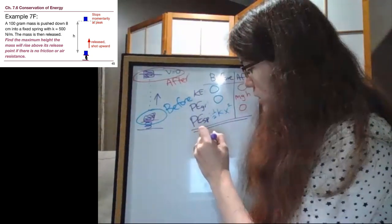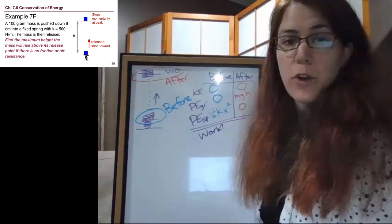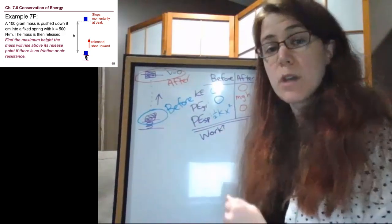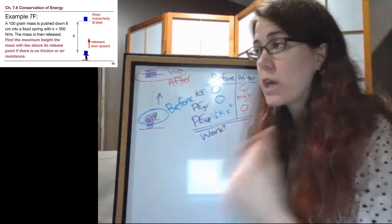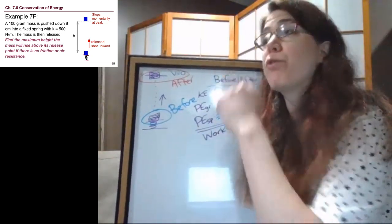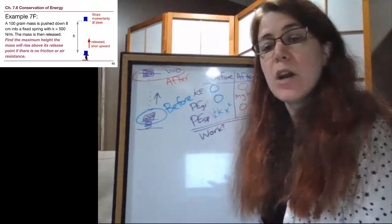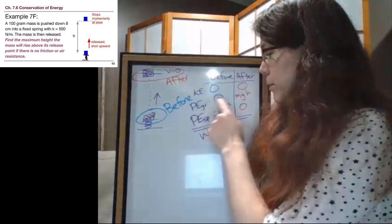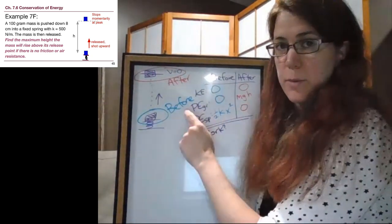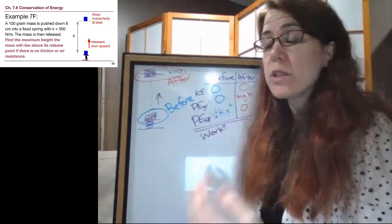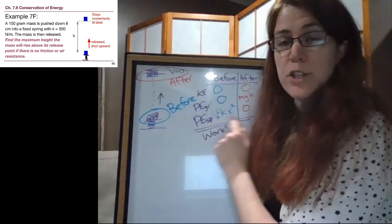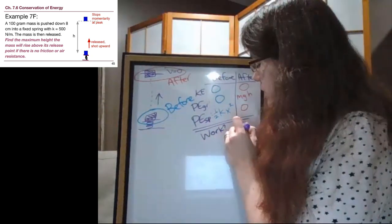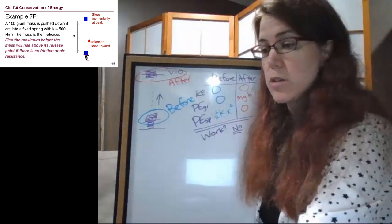And then separately, we ask ourselves, is there a work term? And we look for any additional push or pull information that we are told about. Now, again, this is really important. Somebody did push the mass into the spring, but we are not told what force they used. And all of that happened before our problem started. And so now the only forces that are acting on that mass at any point in the problem are gravity, but that's already being taken care of with the potential energy of gravity term. And the force from the spring, which although it is not constant, is still being taken care of properly by the potential energy of the spring term. So there is no additional force here to worry about because in the wording, we are also reminded that there's no friction or air resistance to look at here either.